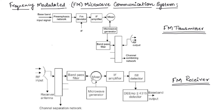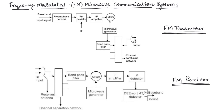The mixer down-converts RF microwave frequencies to IF frequencies and passes the signal to the IF amplifier. The required amplification is done at the IF amplifier. The output of the IF amplifier is given to the FM detector, which separates the baseband signal from the IF band. The output of the detector is then applied to the de-emphasis network.